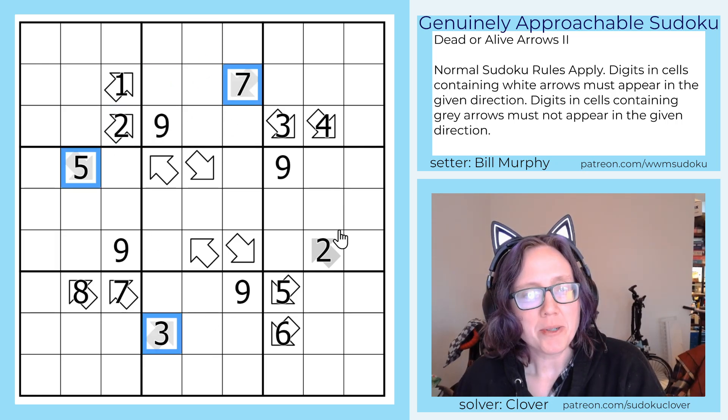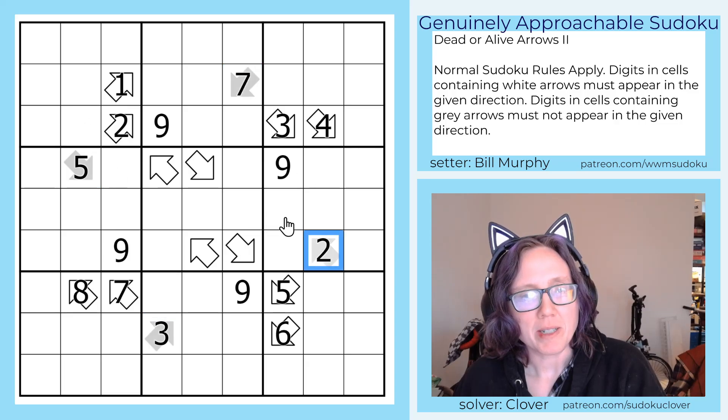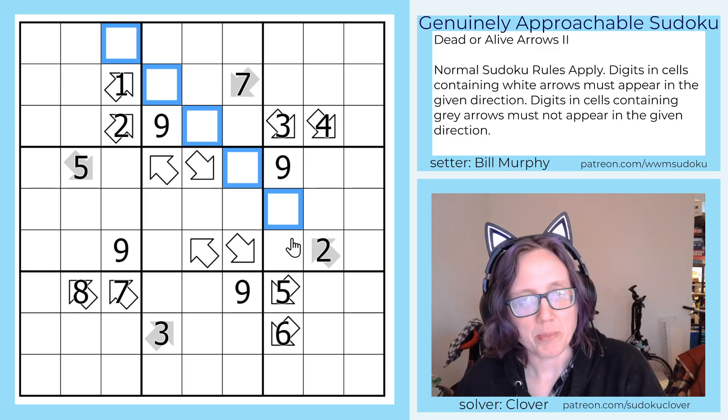For the gray arrows, if a digit appears in a gray arrow, then that digit is not allowed to appear again in the direction that the arrow is pointing.